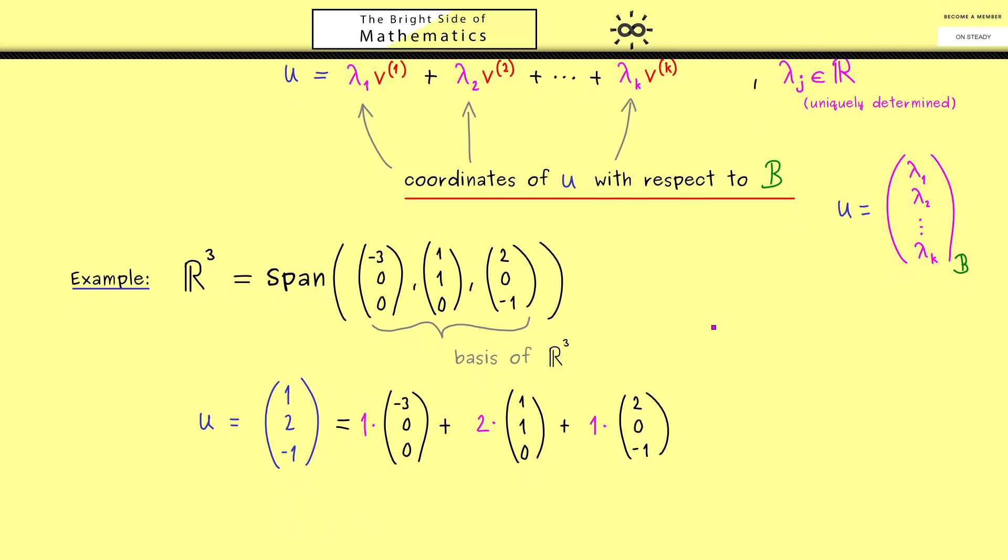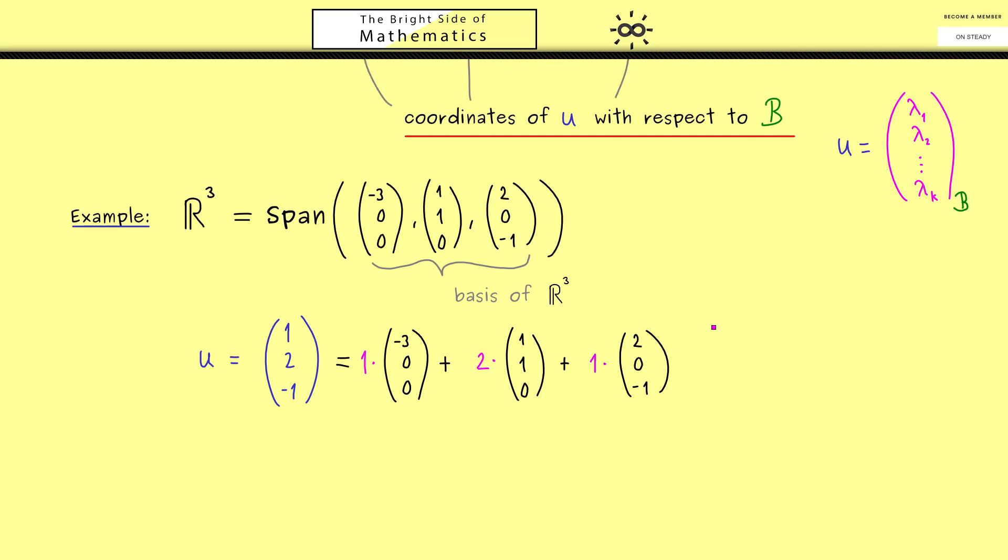Therefore I would say let's also look at another example here. So maybe let's take the vector u tilde which is given by 3, 0, 0. And then we immediately see we just need the first vector in the basis here times -1. So the coordinates here are given by -1, 0, 0.